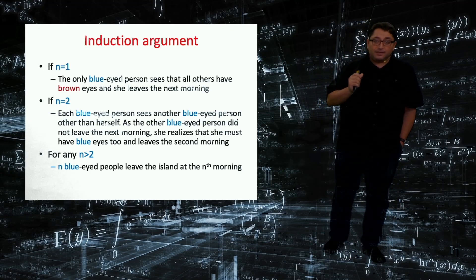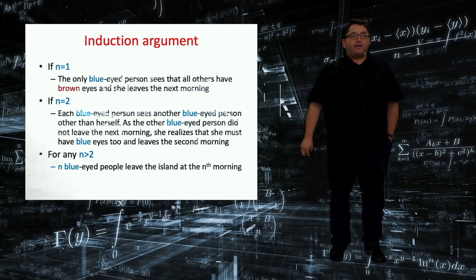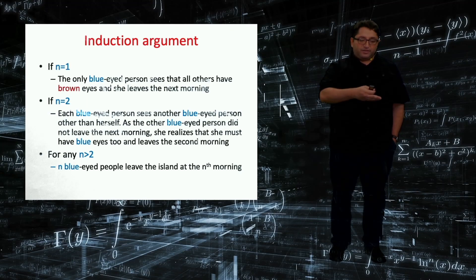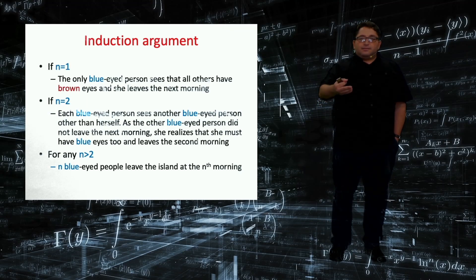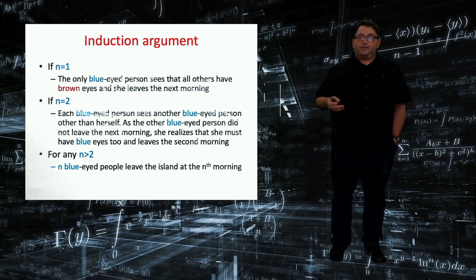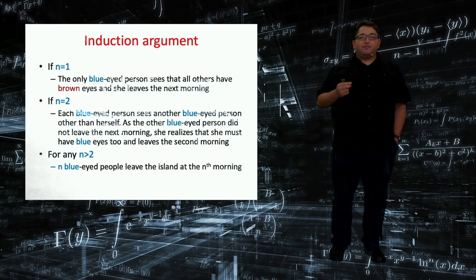Here, I would like to highlight the importance of the common knowledge. Let's go back to n being equal to two. There are two blue-eyed people. And let's remember the announcement, which was at least one person has blue eyes. I see that at least one person has blue eyes, and everybody can see that, because there are two blue-eyed people. Even though the outsider said something that we all know, but it invoked the whole induction argument that led to blue-eyed people leaving the island after two days. So that's what common knowledge is about.